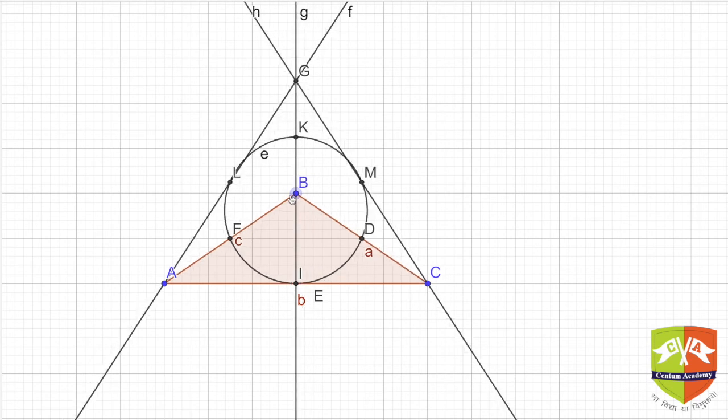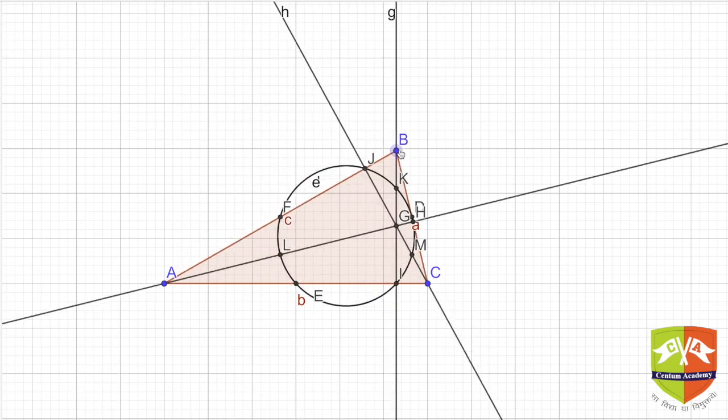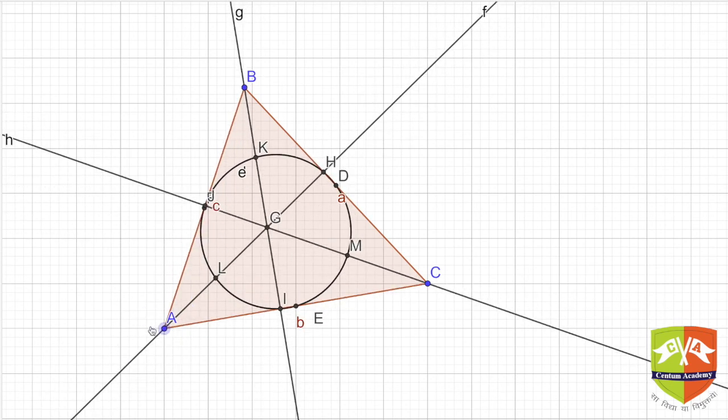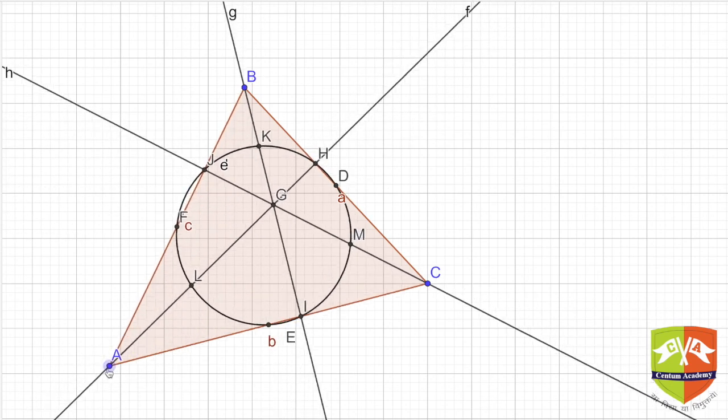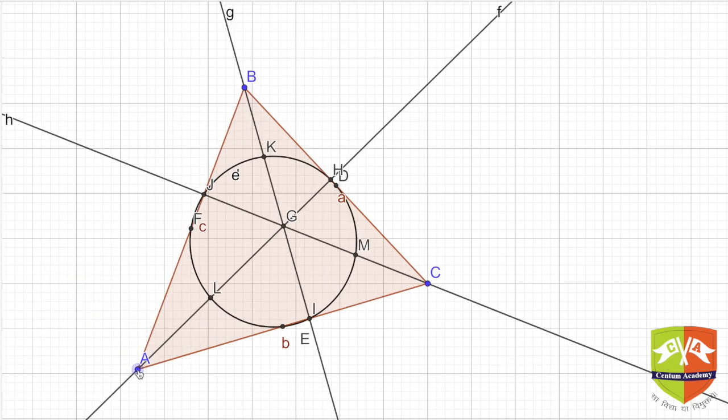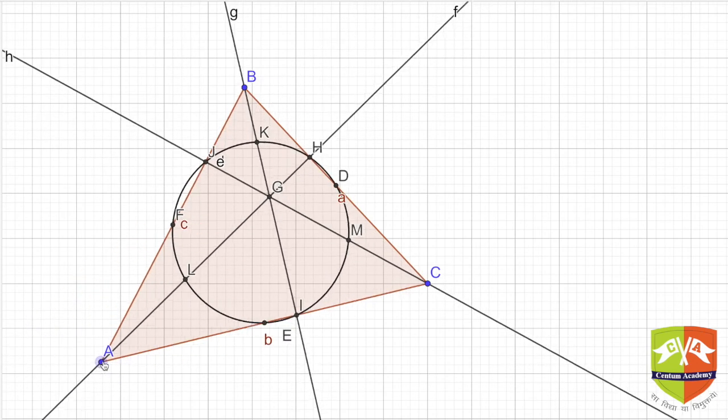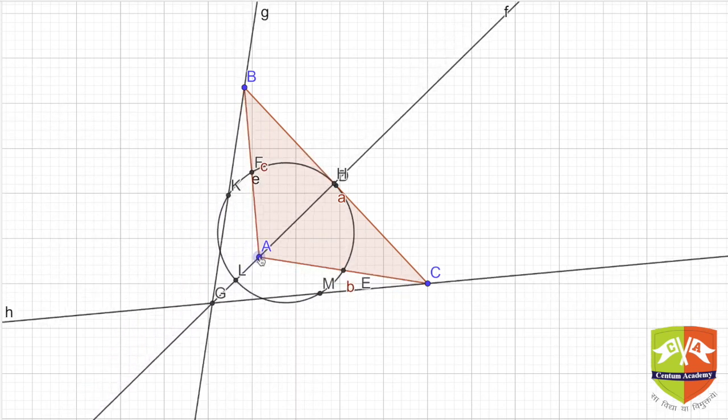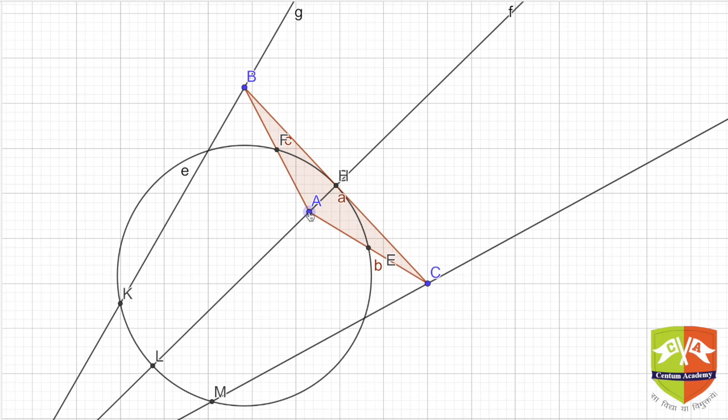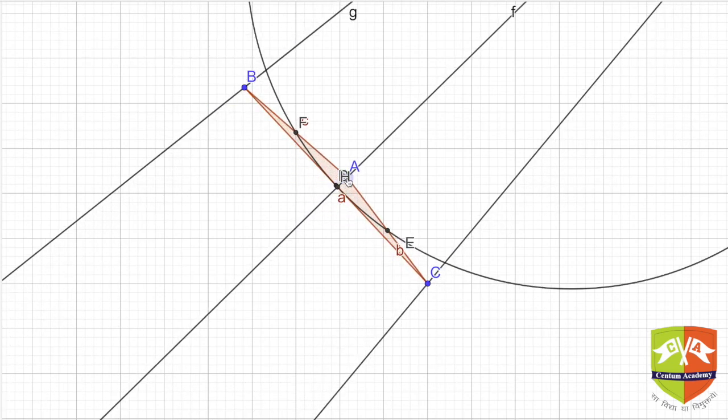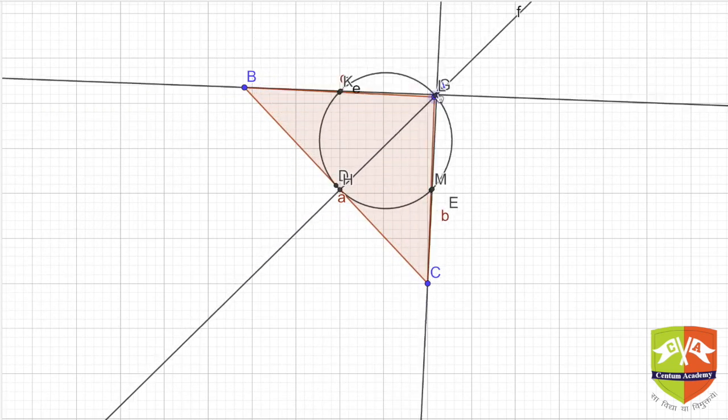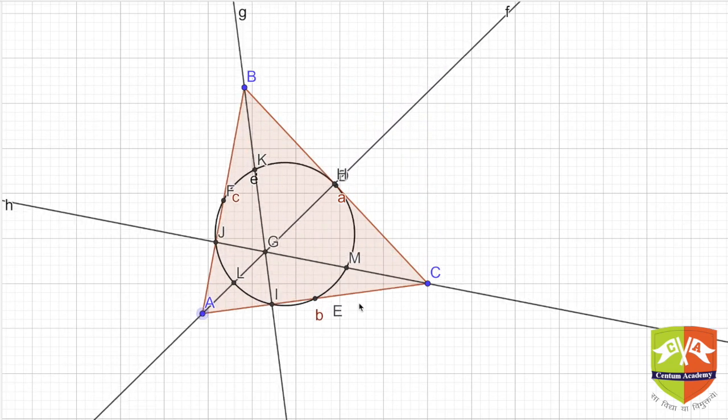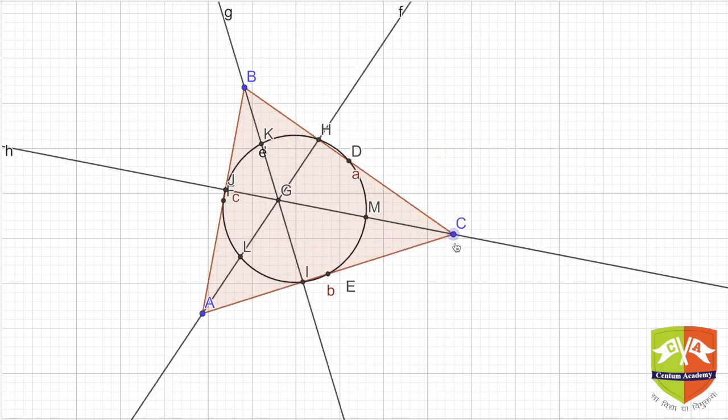Isn't it interesting? So let me just move this point A. So if you see as A is moving, irrespective of that fact we are getting a nine-point circle all the time. And let me make this now obtuse. Yeah, even then you can see there is a nine-point circle. And similarly if I move C also you will see the same thing.